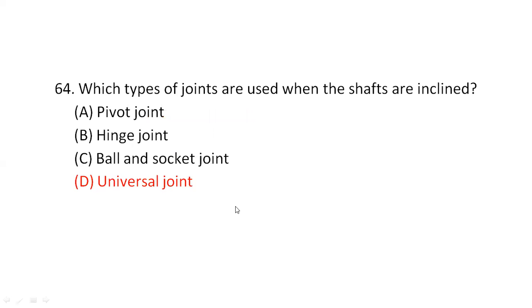Which type of joints are used when the shafts are inclined? For inclined shafts we use the universal joint. Option D.